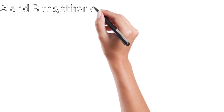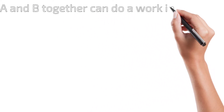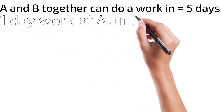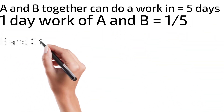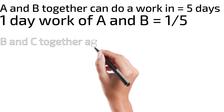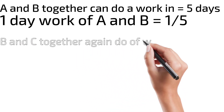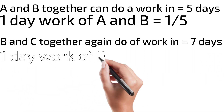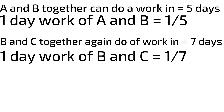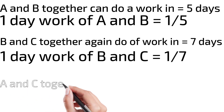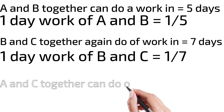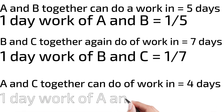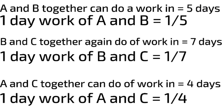Now let's solve this. A and B together can do the work in five days, so one day work = 1/5. B plus C together can do the work in seven days, so one day work = 1/7. A plus C together can do the work in four days, so one day work = 1/4.